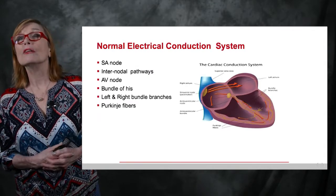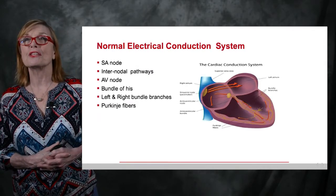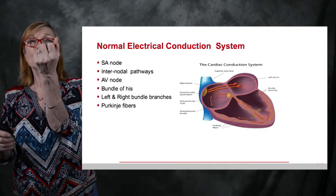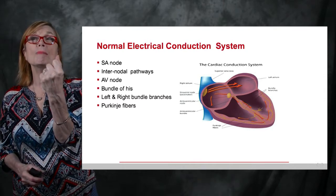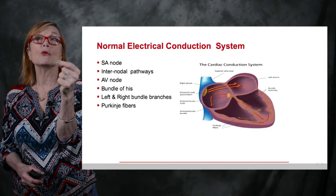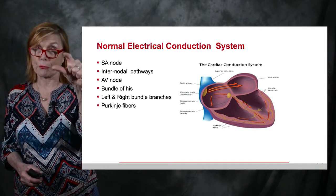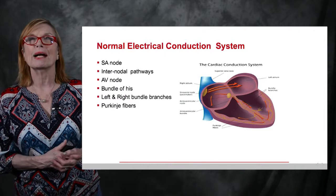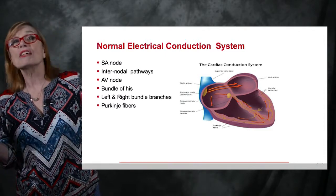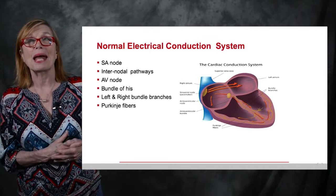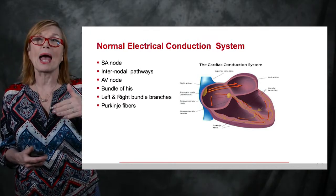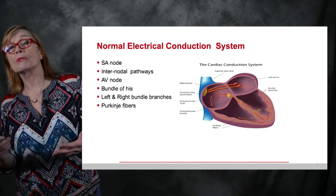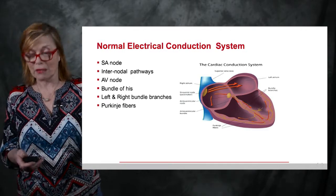Looking at the normal electrical conduction system: the firing of the sinus node, the transition through both right and left atria through the internodal path, the gathering of the impulse in the AV junction, the transfer into the common bundle of His — which is pre-bifurcation of right and left bundles — and ultimately delivered into the ventricular myocardium by the Purkinje fibers. This is your normal electrical pathway, but patients don't always behave as expected.